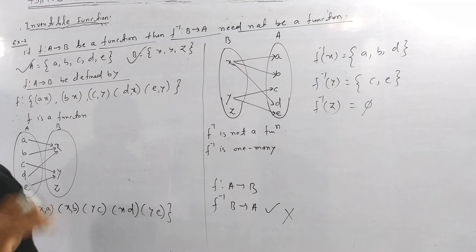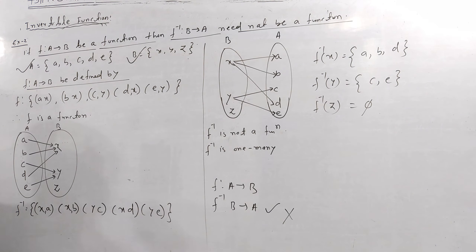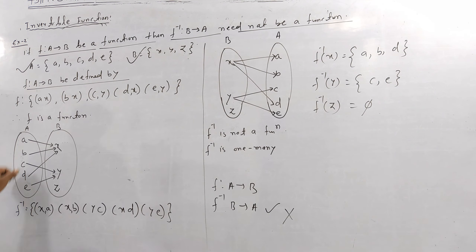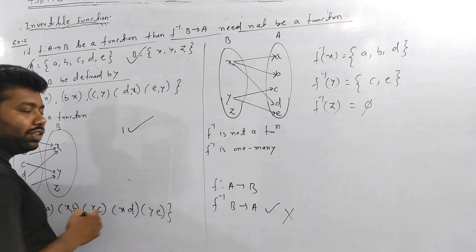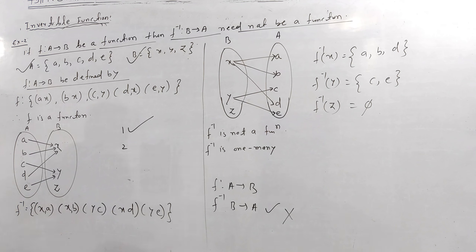Now let's check the conditions. This function needs to satisfy: first, every element of A must be related to an element in B. Second, no element of A has more than one image in B. If A does not have a mapping going out from it, the first condition fails. Let's verify: no element of A should have more than one image in B.